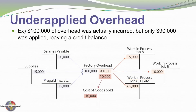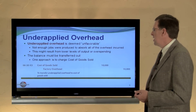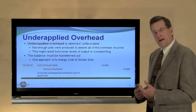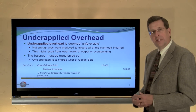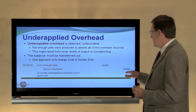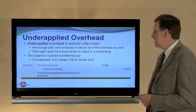You might have underapplied overhead. Here, $100,000 was actually incurred, but we only applied $90,000 to production. That left us with $10,000 of underapplied overhead. We're going to close out the factory overhead account by crediting factory overhead and debiting cost of goods sold. Underapplied overhead is deemed unfavorable — perhaps because not enough jobs were produced to absorb all costs, or maybe there were overruns in actual costs. As we zero out the factory overhead account, we increase our expenses for cost of goods sold.